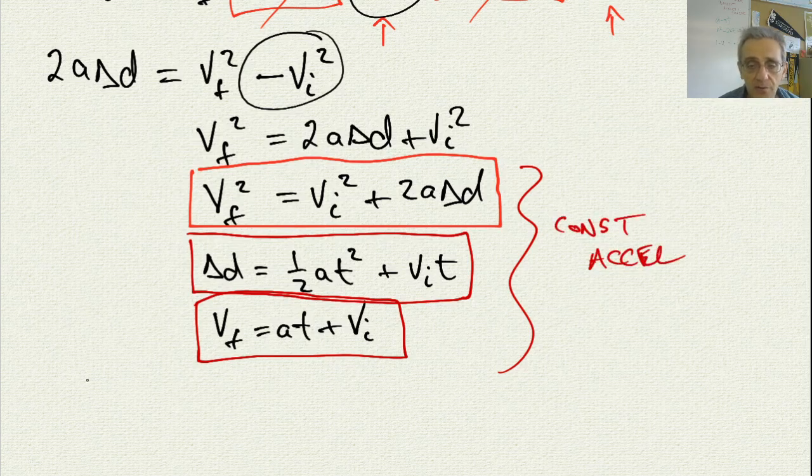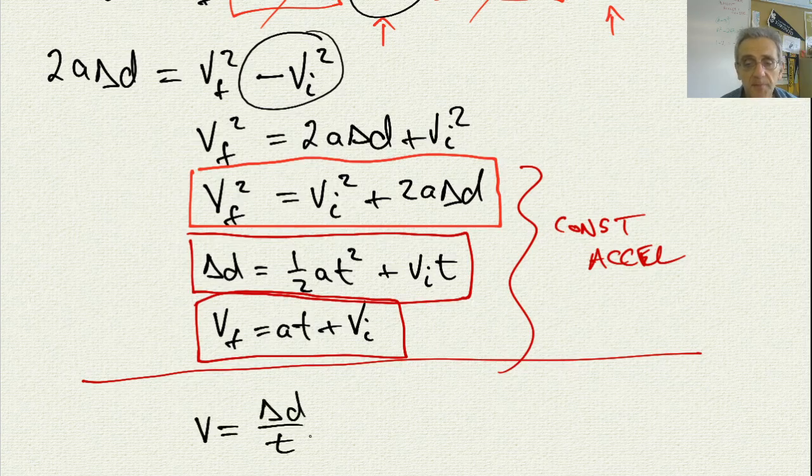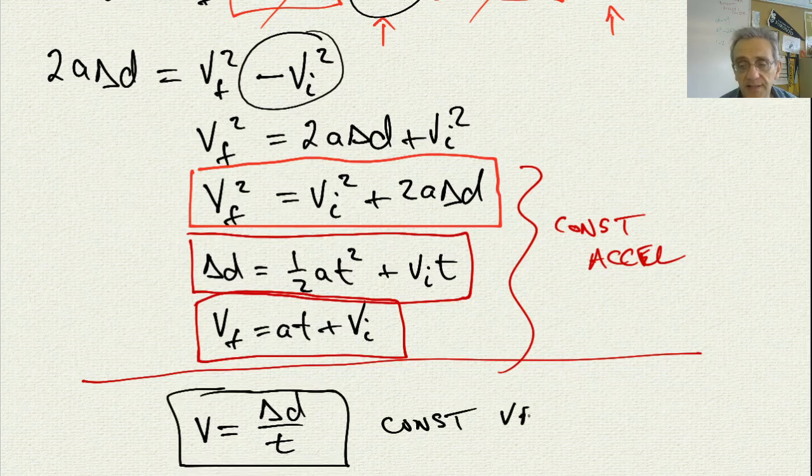Now, remember that we also wanted to write, we had one equation for constant velocity. And that one equation for constant velocity was v equals delta d over t. This equation is for constant velocity.